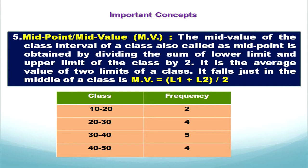Let's see with the help of an example. The first class is 10 to 20. Lower limit is 10, upper limit is 20. We add both limits: 10 plus 20 equals 30. Then divide by 2 to get midvalue 15. For the next class, lower limit is 20, upper limit is 30: 20 plus 30 equals 50, divided by 2 gives 25. The gap between midvalues is 10.